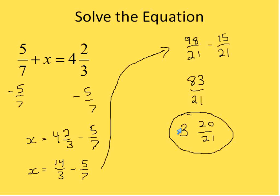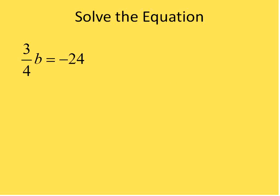To go from an improper fraction to a mixed number in steps like these, you can use long division to arrive at that result.